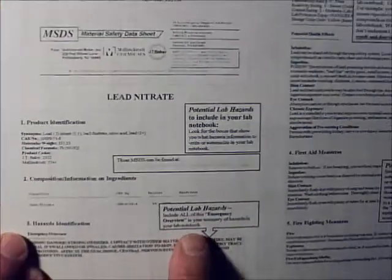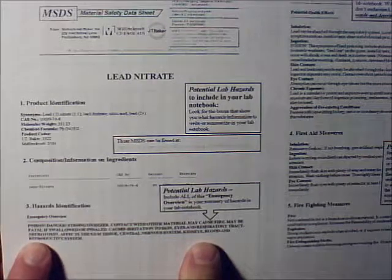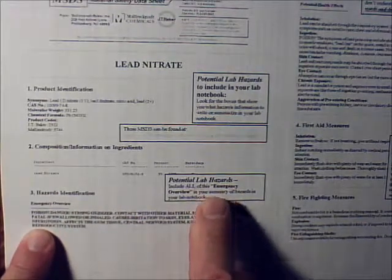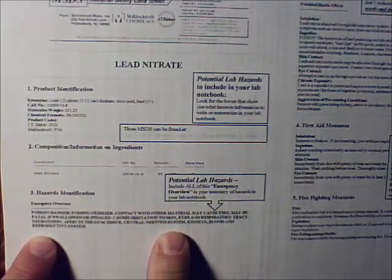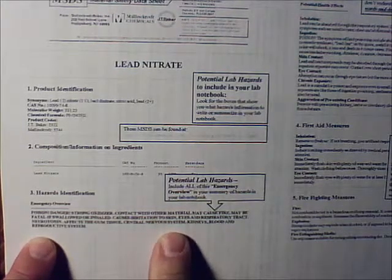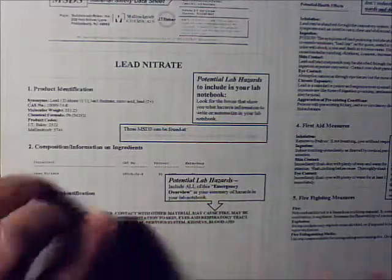So the things that you're going to need to do is you want to write out your potential lab hazards. This emergency overview pretty much needs to be written down word for word. If you've got an emergency overview written into an SDS or an MSDS, that pretty much needs to be in your lab notebook.